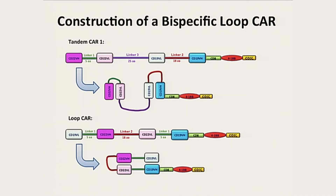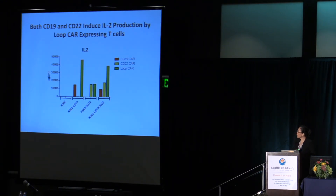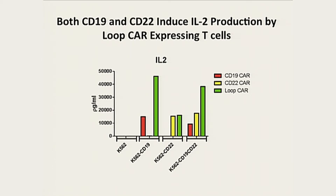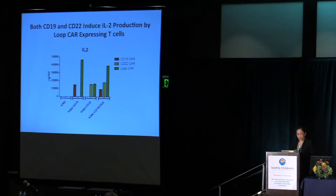We then made a bispecific loop CAR. Unlike the tandem CAR, which may fold sequentially, the loop CAR flips back to align the CD19 and CD22 domains together, potentially providing a tighter structure. In vitro cytokine production showed it produced plenty of IL-2 — even more than the single CD19 CAR — and it was also active when encountering CD22-expressing cells.